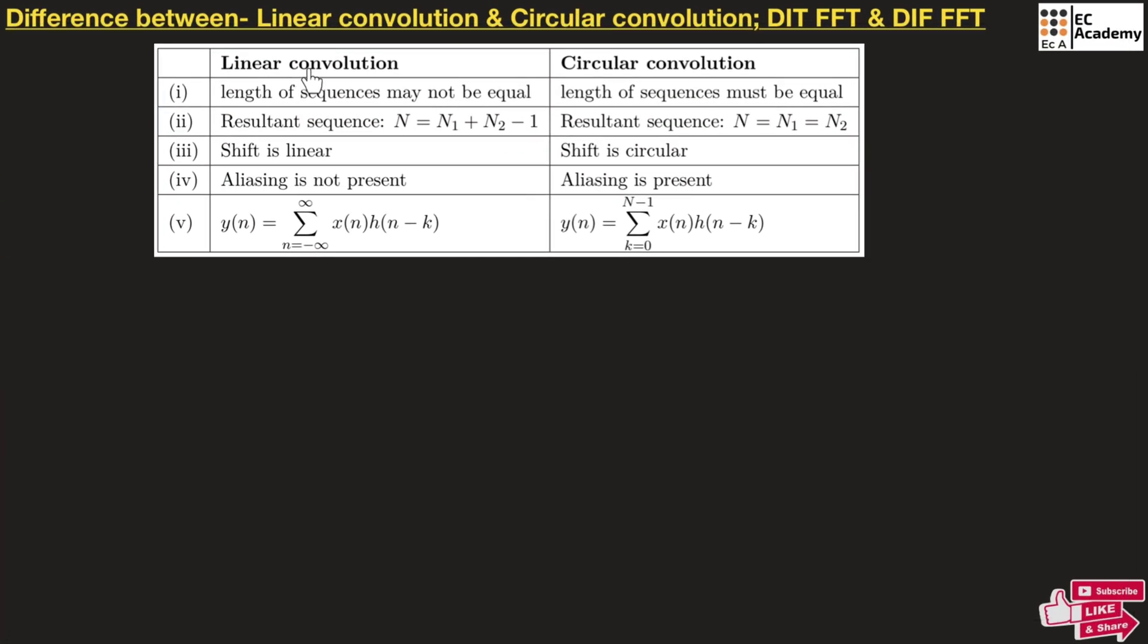First, let us understand the difference between linear convolution and circular convolution. Let us start with linear convolution. In linear convolution, the length of the sequence may not be equal and the resultant sequence is n equals n1 plus n2 minus 1. The shift is linear in case of linear convolution and aliasing is not present. So mathematically, this is how we can represent a linear convolution.